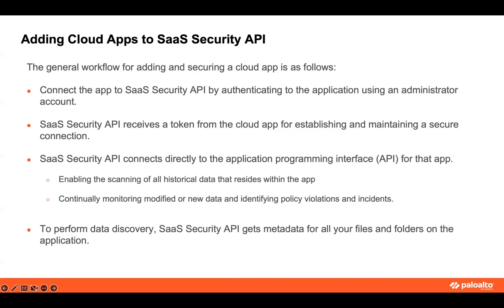The general workflow for adding and securing a cloud app is as follows. First, we need to connect the cloud app to SaaS Security API. Then we need to authenticate the app using an administrator account. We know that the required privileges are different for each application. After successful authentication, SaaS Security API receives a token from the cloud app. Using the token, SaaS Security API establishes a secure connection.